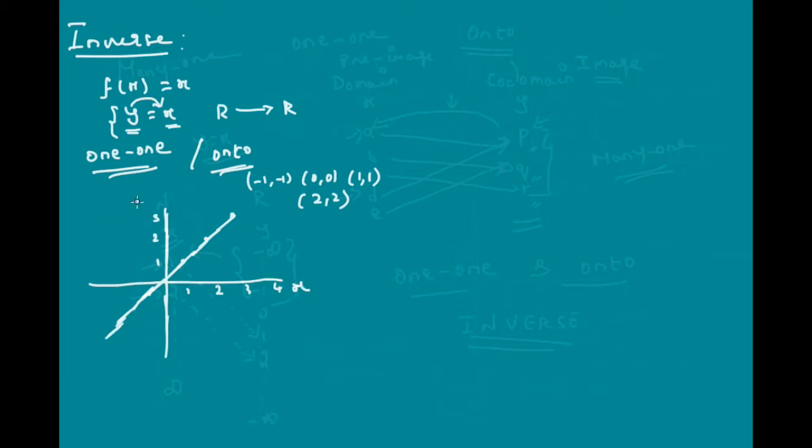This is your x, this is your y and of course, the domain is x and co-domain is y which is equal to x again.